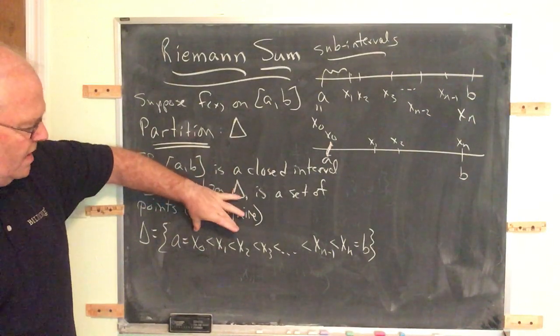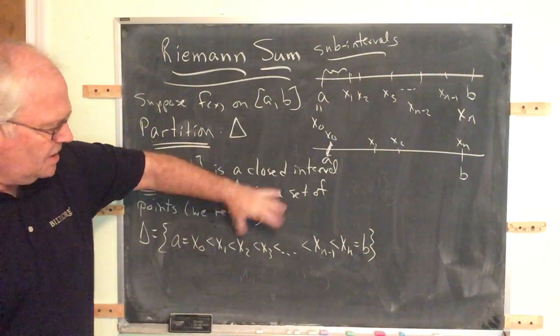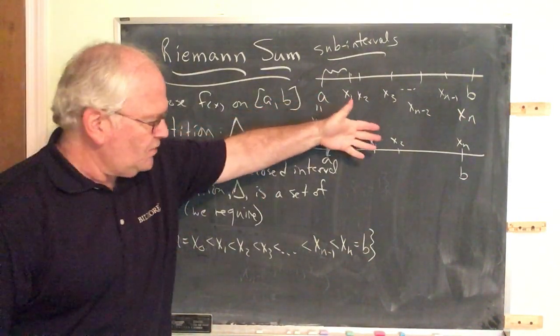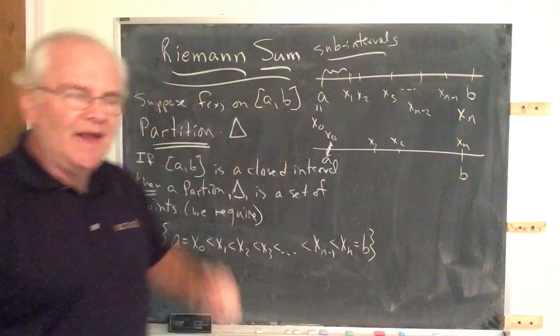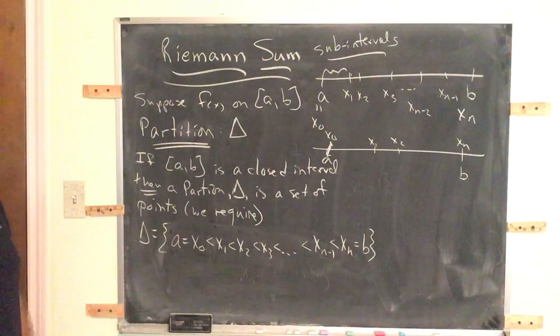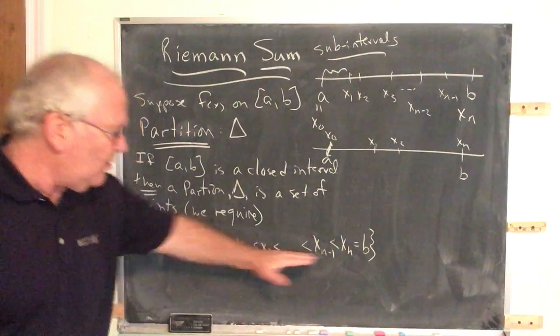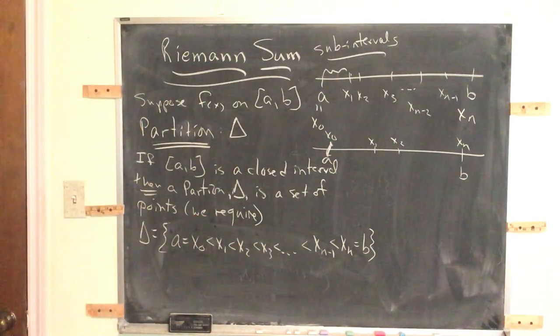You may have as many or as few as you like, as long as they're in sequence. So x1 must be between x0 and x2, and so on. As long as they're in sequence, as long as the first is equal to a, the last is equal to b, that corresponds to a partition. So delta is that set of points that is the partition of that interval.